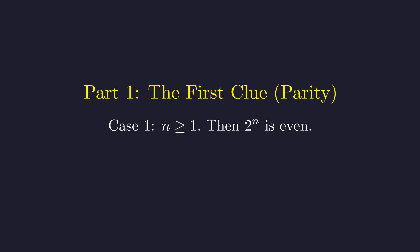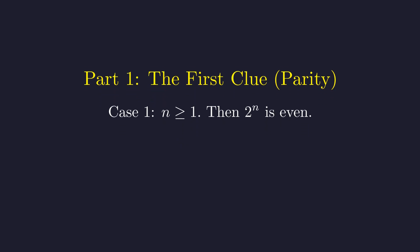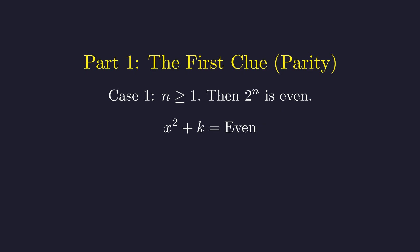Let's first consider the case where n is 1 or greater. This makes 2 to the n an even number. This means the left side, x squared plus k, must also be even.